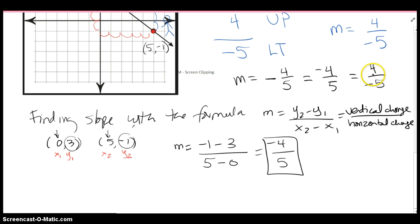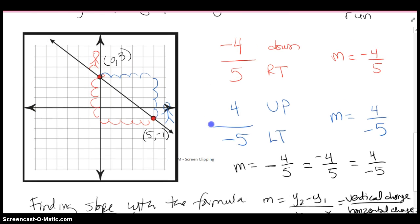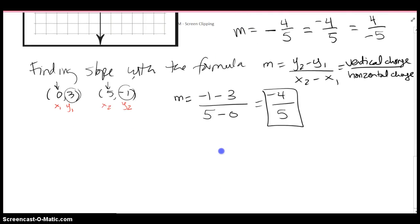Remember, negative 4 fifths, negative 4 over 5, or 4 over negative 5, they're all exactly the same thing. So whether I use the formula or look at the graph and count my steps, I'm getting the exact same slope.